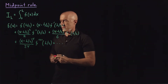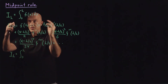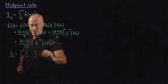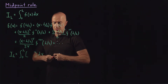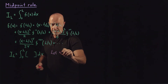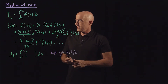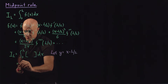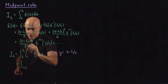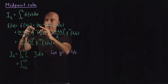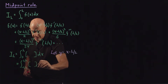We substitute this into the integral. So we have I sub h equals the integral from 0 to h, with f of x replaced by the Taylor series. We change variables: let y equals x minus h over 2, so dy equals dx. The lower limit becomes minus h over 2, the upper limit becomes h over 2, and everywhere there's an x minus h over 2 we put in a y.